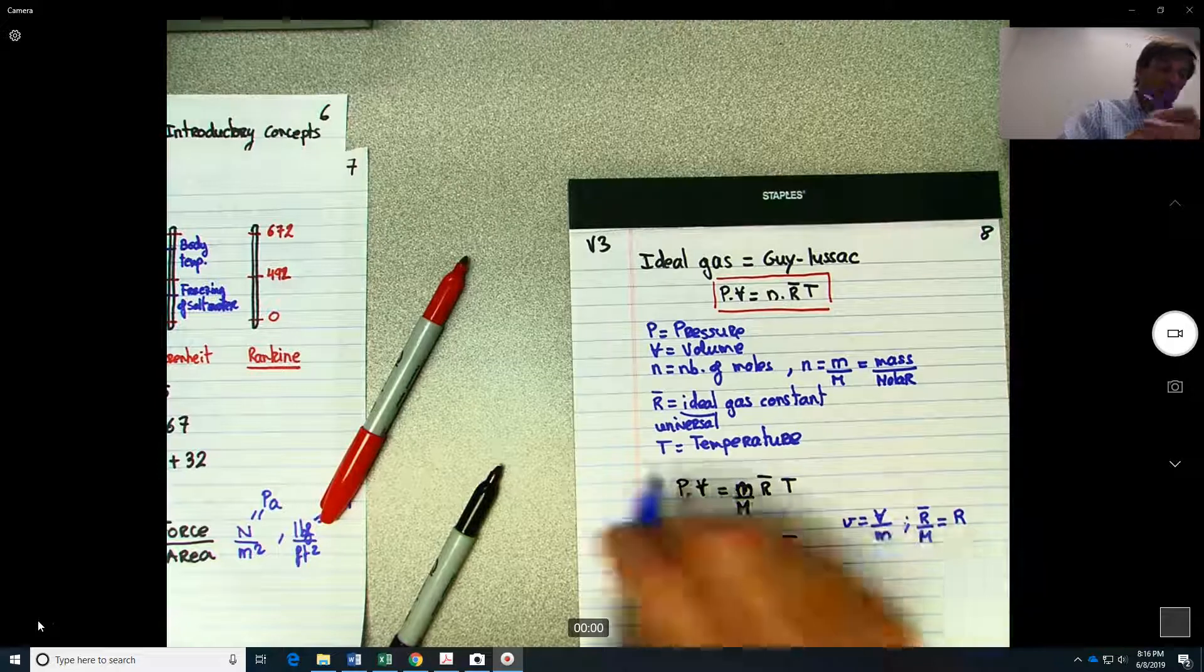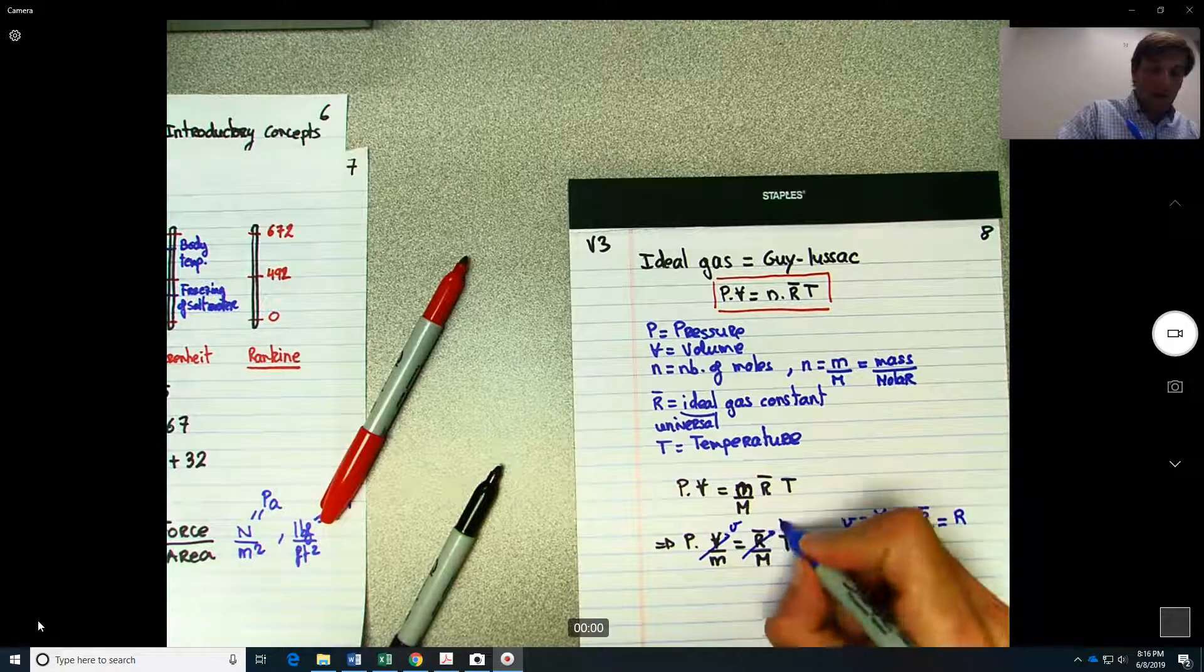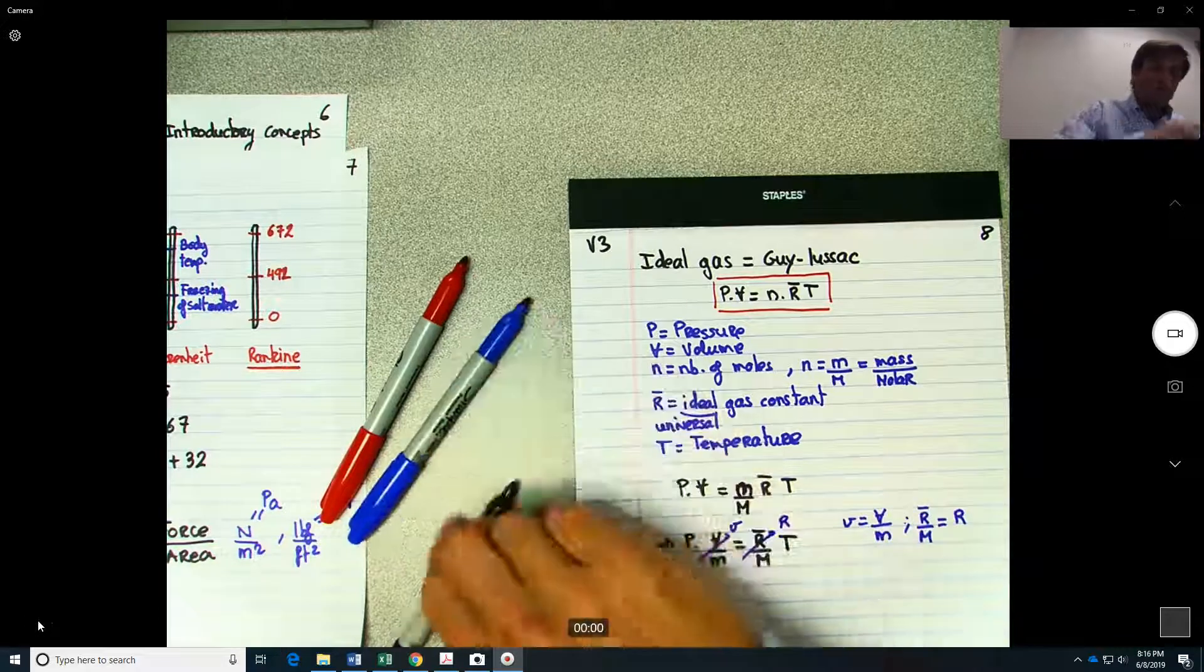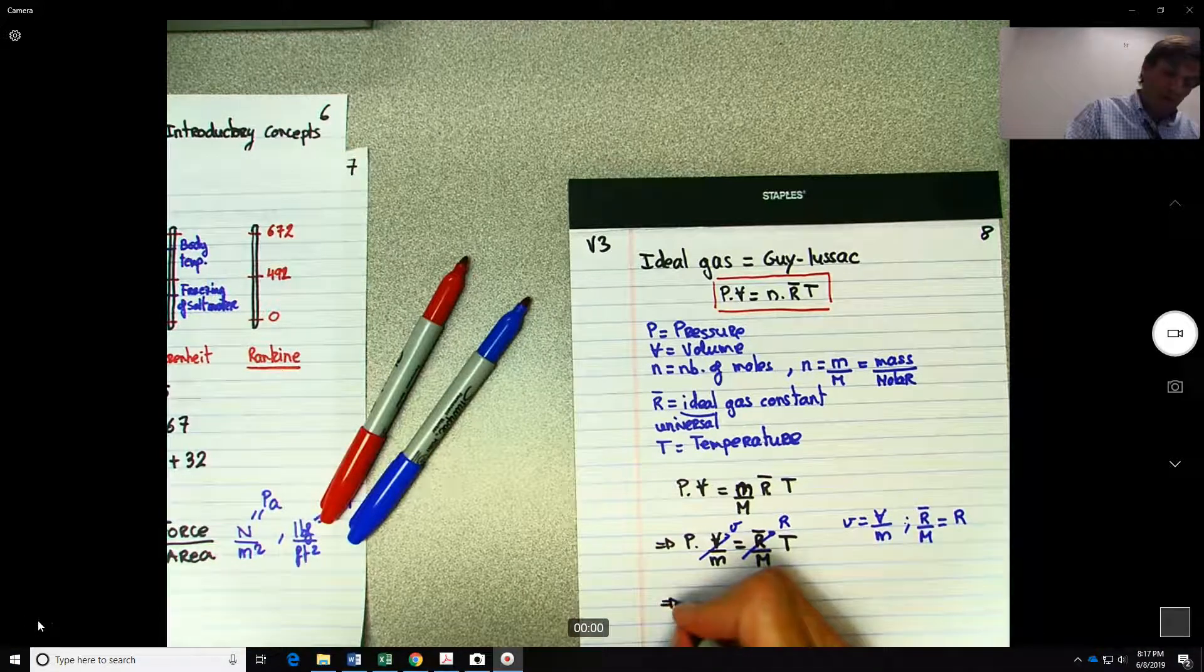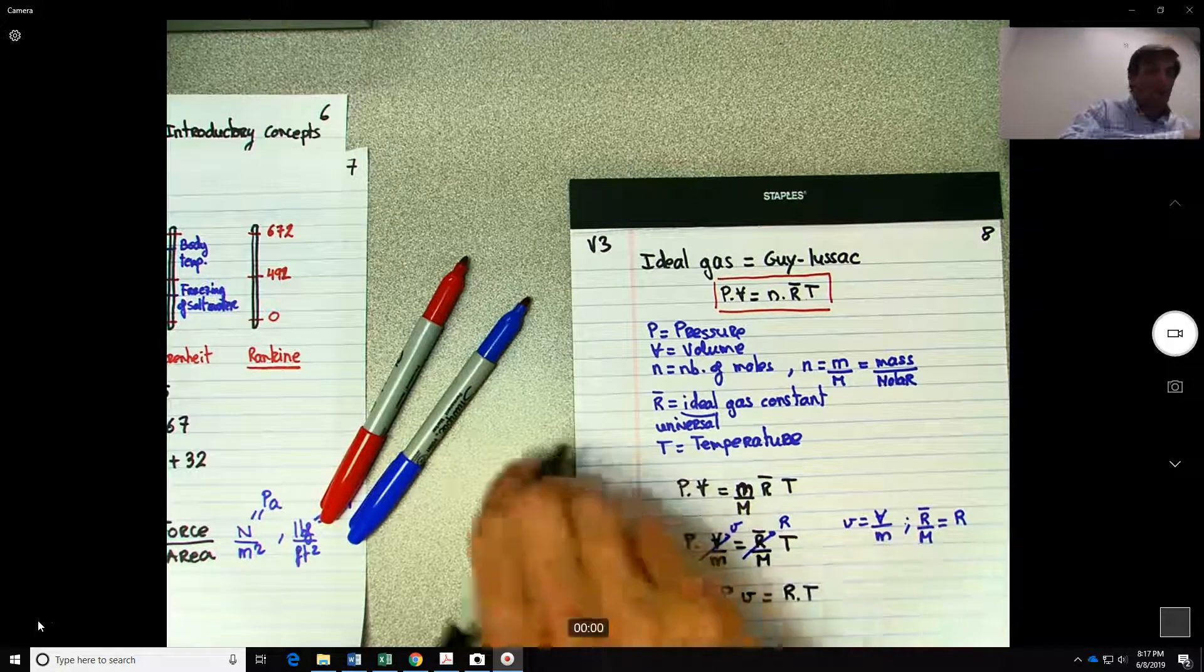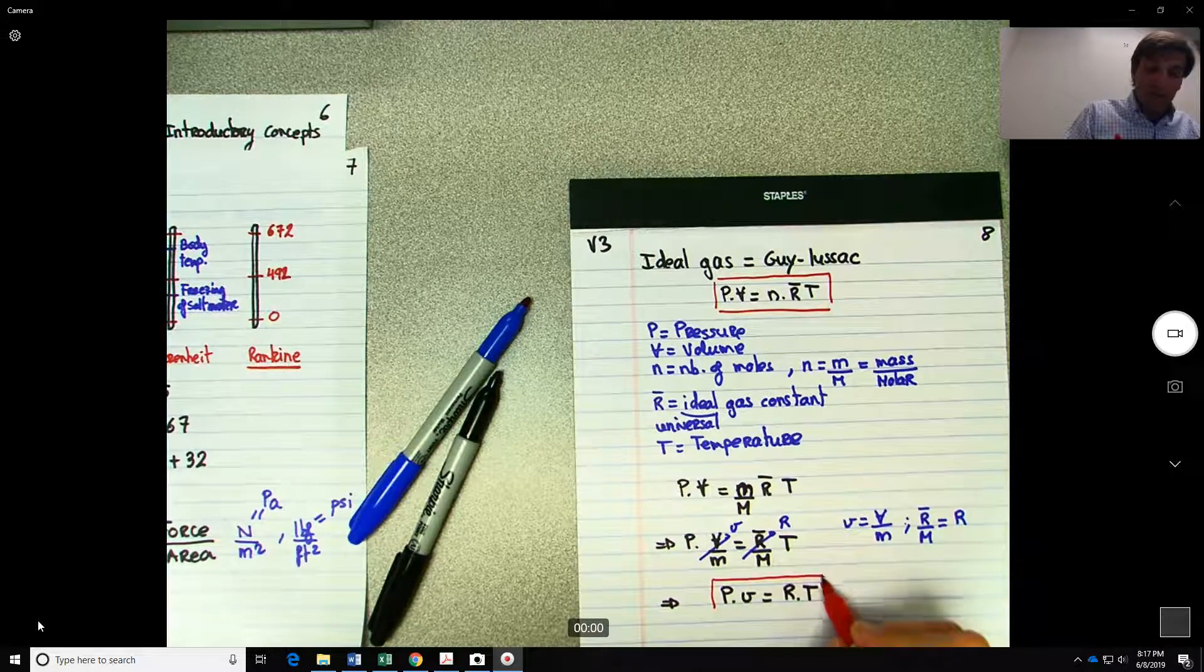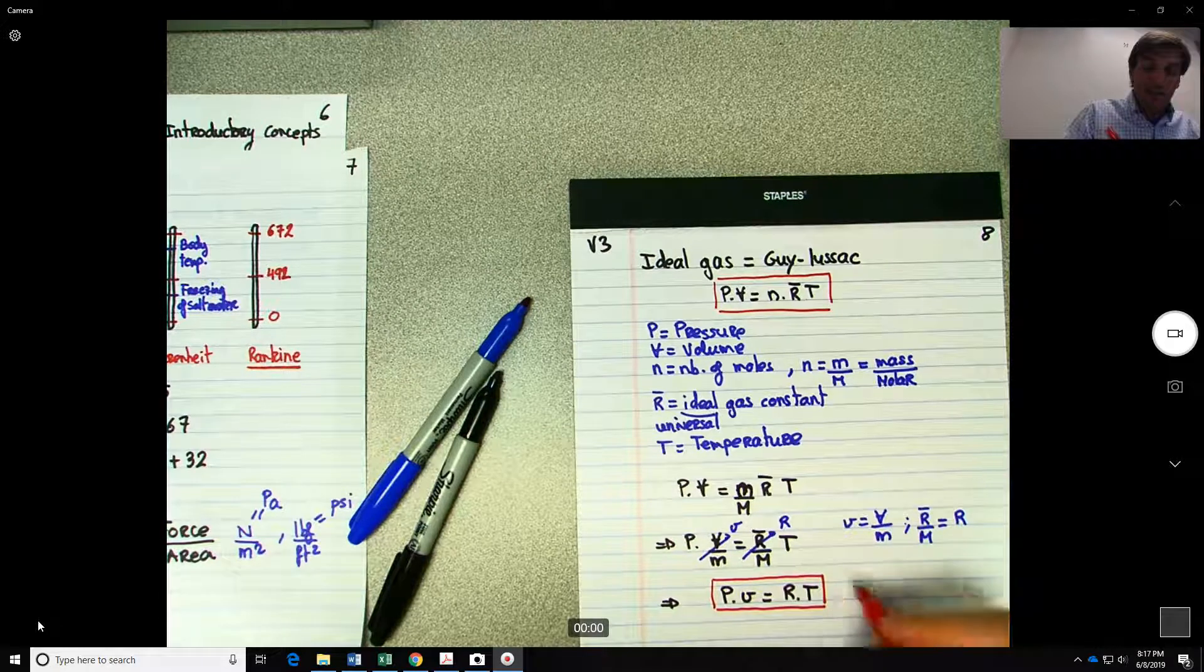So that relation over here will become Pv equals RT. And you will see throughout the books that generally this is the form of the ideal gas relation.